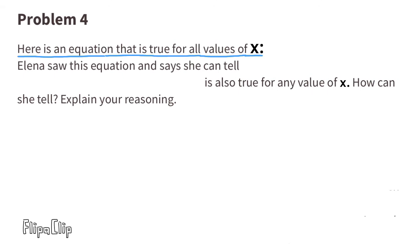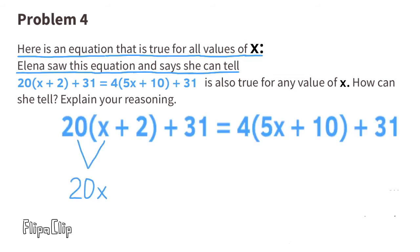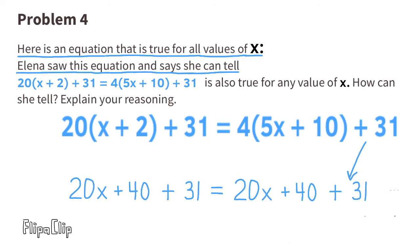Problem number 4. Here is an equation that is true for all values of X. Elena says she can tell that 20 times X plus 2 plus 31 equals 4 times 5X plus 10 plus 31 is also true for any value of X. Using the distributive property: 20 times X is 20X, and 20 times 2 is 40, plus 31. On the other side, 4 times 5X is 20X, and 4 times 10 is 40, plus 31. Both sides have the same terms, so it's always true.